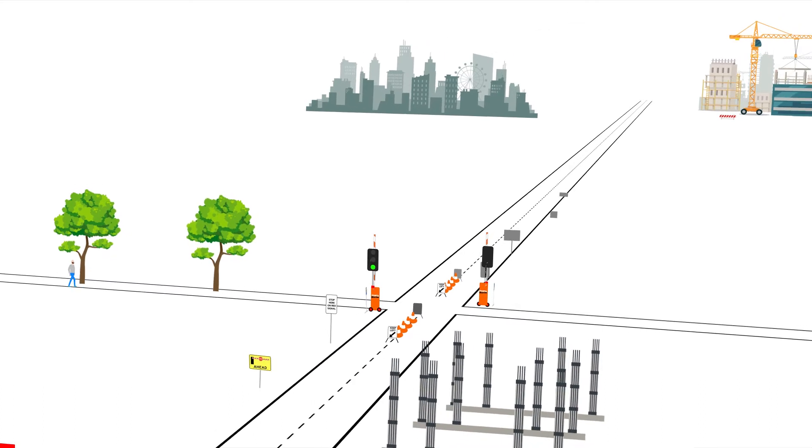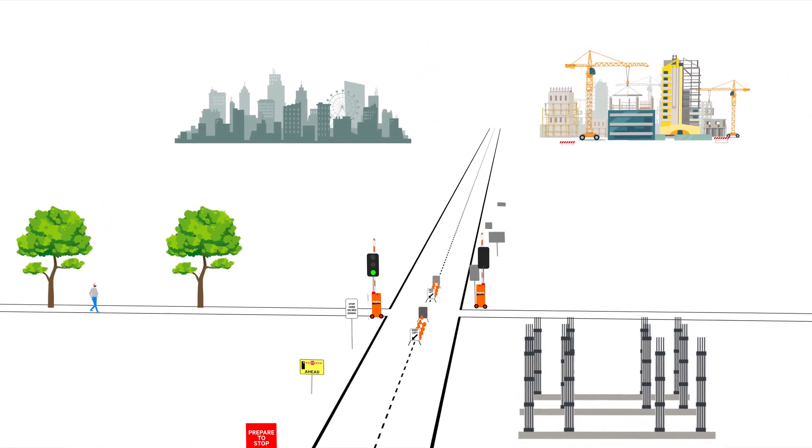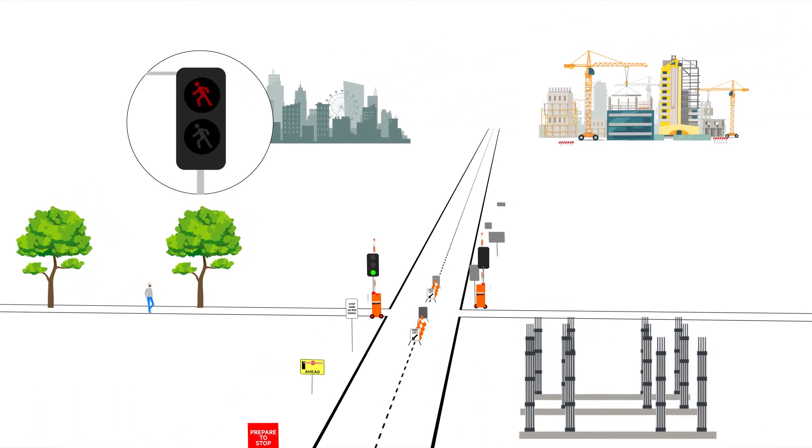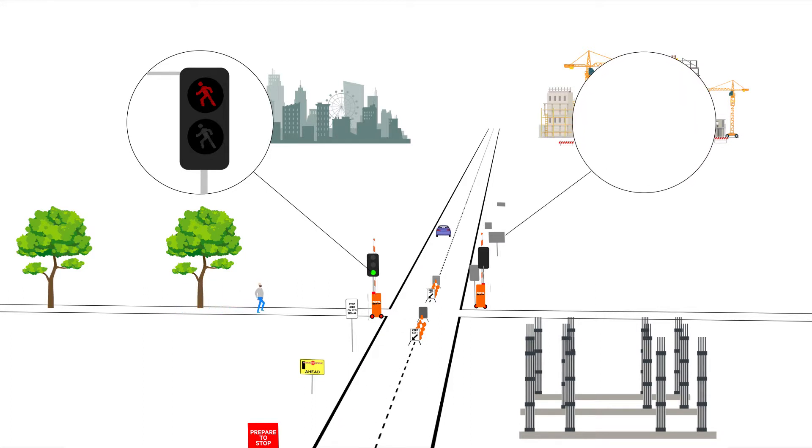In this typical city construction site scenario, the Portaboom unit, fitted with the pedestrian light accessory, is used to manage pedestrians. Meanwhile, the traffic light accessory controls the vehicles that have right of way. When a pedestrian pushes the crossing button,